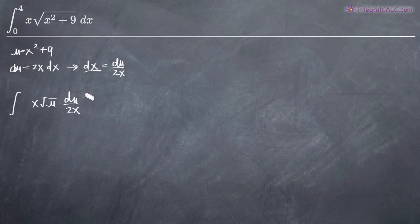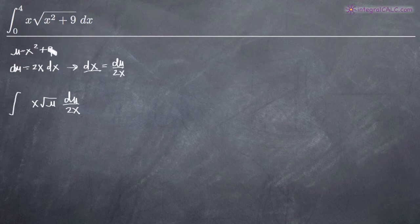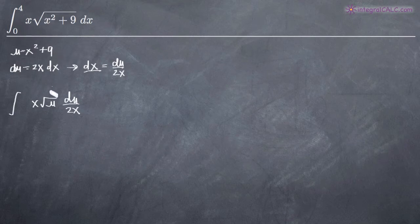At this point, we can do one of two things. You can either use the same limits of integration that you had in your original problem — put in 0 and 4 — but that means you'll end up having to substitute x squared plus 9 back in for u at the end. Or you can transform your limits of integration to be related to u instead of x, and you won't have to plug back in for u later.